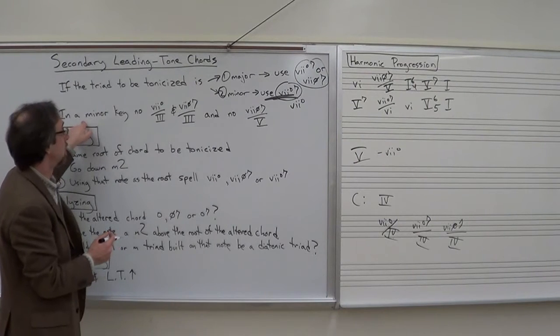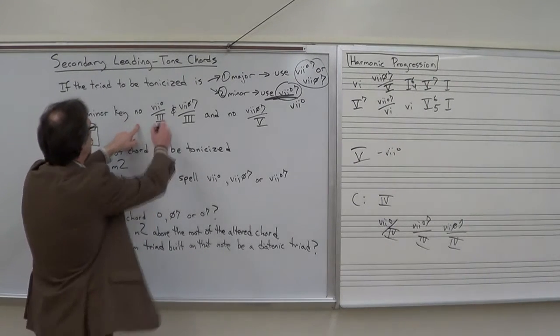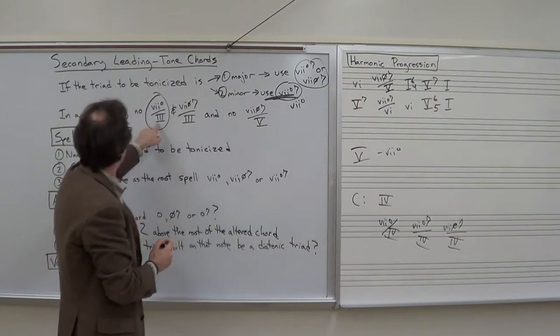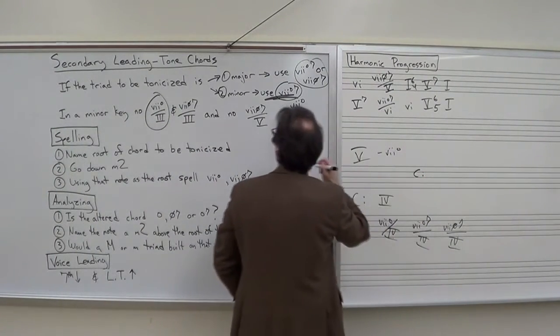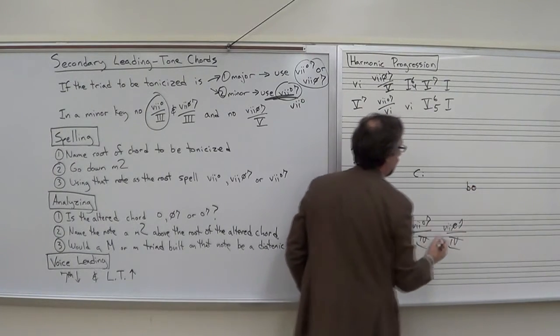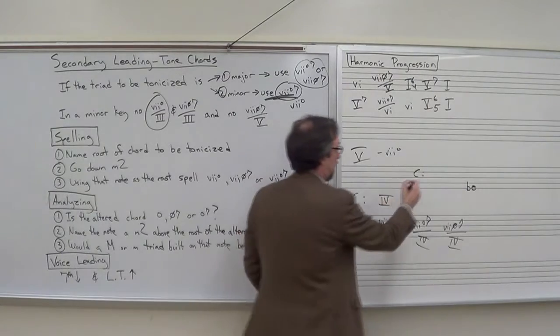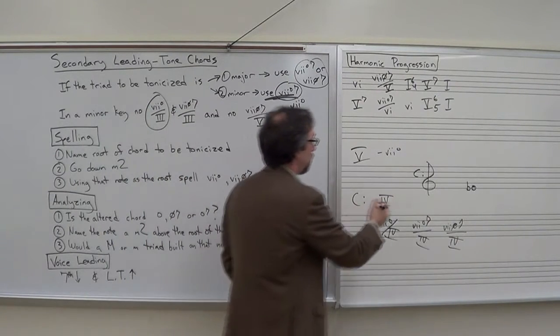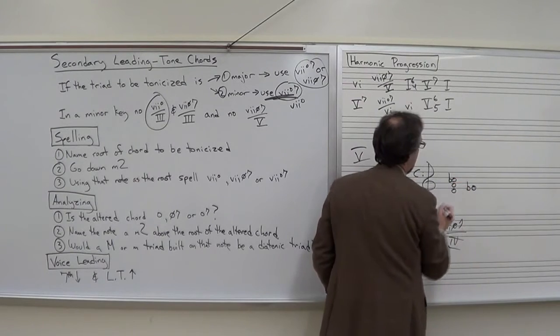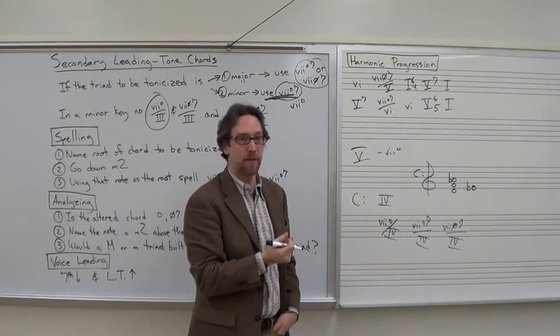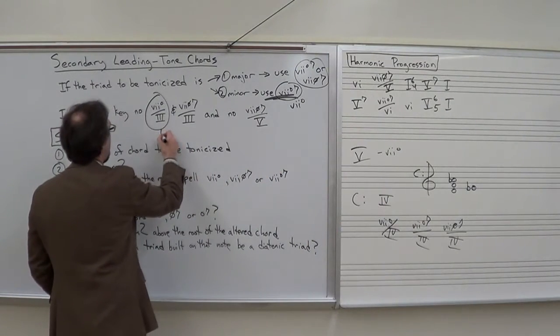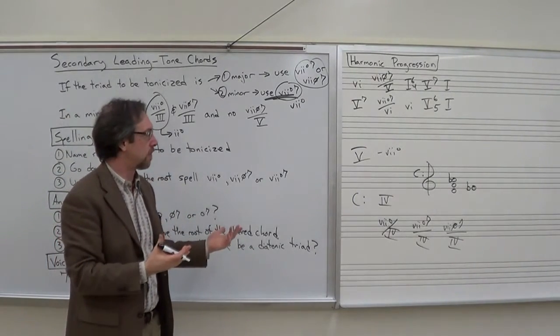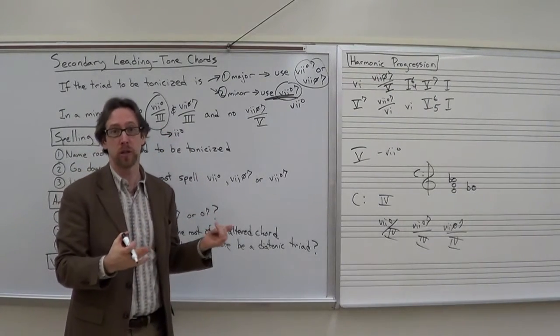There's another exception that we need to be aware of. In a minor key, there's no 7 diminished of 3. Let's examine why. If we say C minor, 7 diminished of 3, well, 3 would have E-flat as its root. So 7 diminished would be D-F-A-flat. You'll find that 7 diminished of 3 is essentially the same thing as 2 diminished.